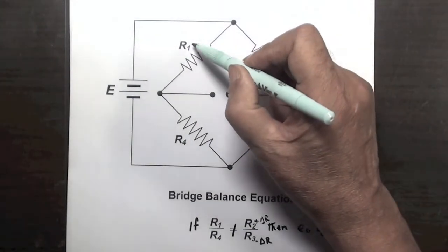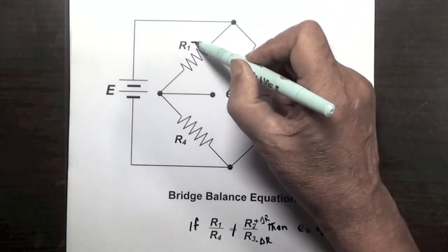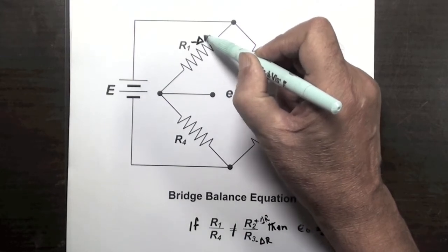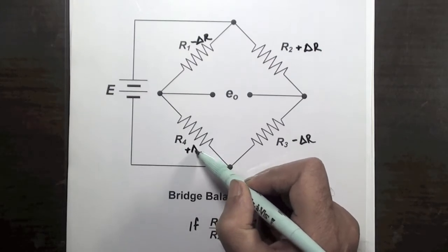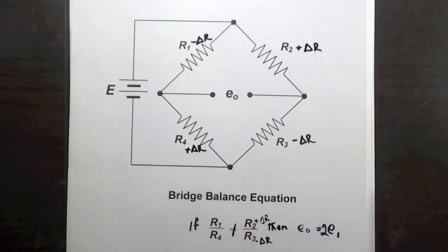Similarly, if the resistances in the remaining two arms of the bridge change by the same amount but in opposite direction to the change in adjacent arms, then the unbalance will be increased by 4 times and the E output will be 4 times E1.